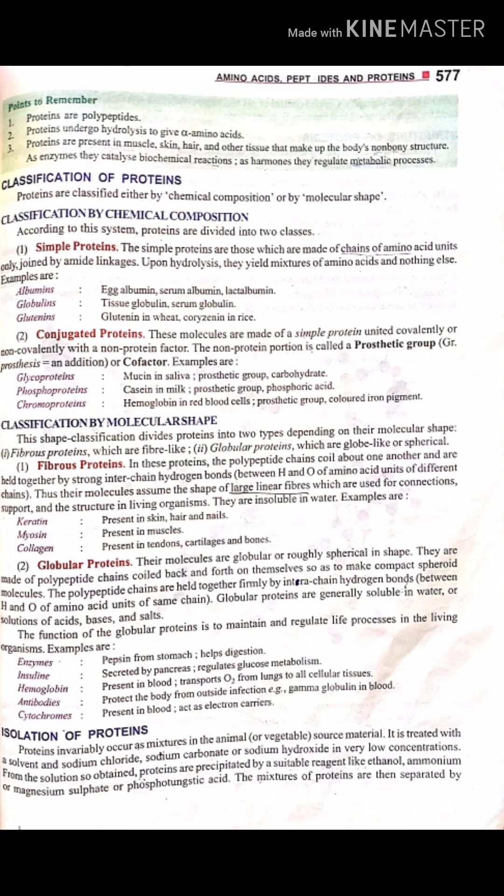Simple proteins, such as albumin and globins (also called gluconin), contain only amino acids. Conjugated proteins, on the other hand, contain a protein portion combined with a non-protein component. Conjugated proteins contain a bunch of molecules in addition to the protein chain.